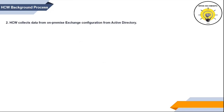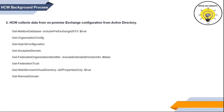Then HCW collects data about the on-premise Exchange organization from local Active Directory. To collect this information, HCW executes a series of PowerShell commands like Get-MailboxDatabase, Get-OrganizationConfig, Get-HybridConfiguration (in case hybrid is already configured), Get-AcceptedDomain to collect information about domains added within the on-premise Exchange organization, Get-FederationTrust, Get-WebServicesVirtualDirectory, and Get-RemoteDomain. So it collects the entire information of the on-premise Exchange organization.